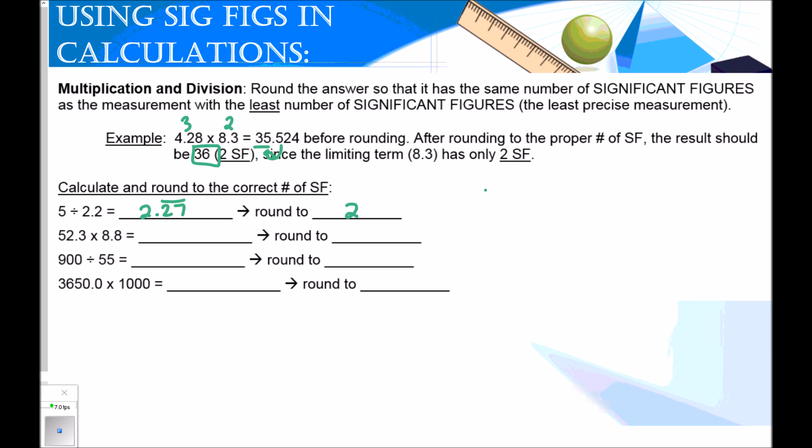So 52.3 times 8.8 comes out to 460.24. This number has three significant figures and this number has two. So I want my answer to have two significant figures. How do I round 460.24 to two significant figures? Does it make any sense for me to write 46? It doesn't. It's important here that my number has the same value. 46 is not the same value, it's 460 something. So if I put a zero here, 460, how many sig figs is that? It's only two sig figs unless I put a decimal. So I leave off that decimal. If I put a decimal, that's three significant figures. But leaving off the decimal is only two. So my final answer here is 460 without a decimal.